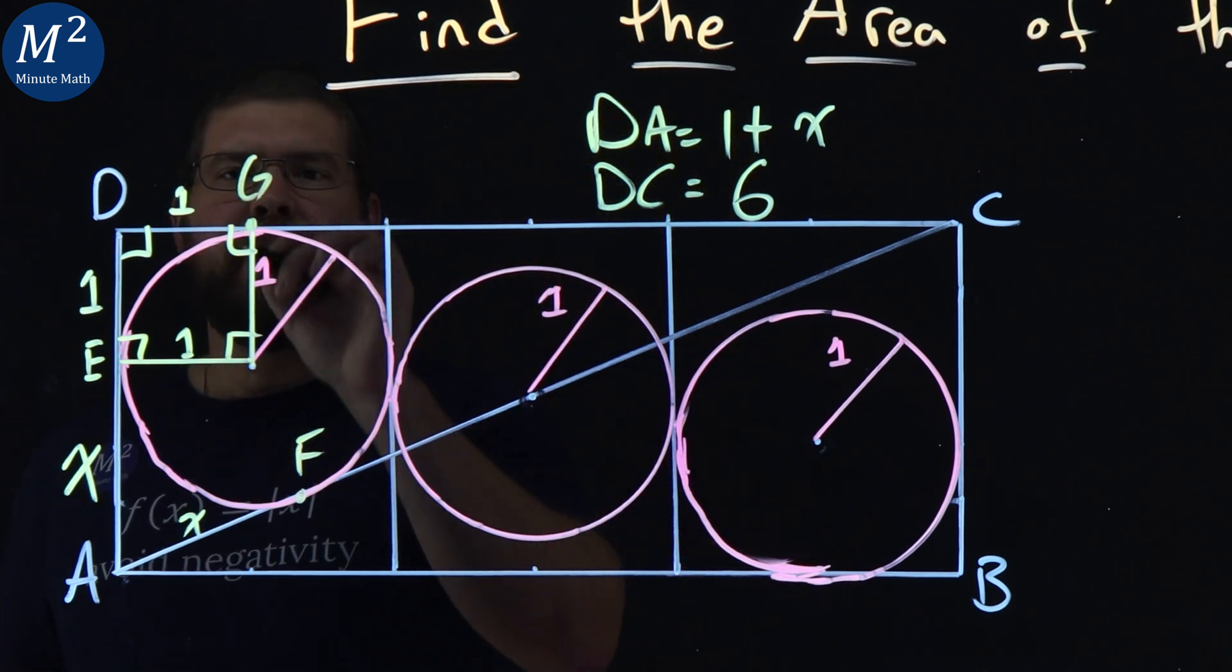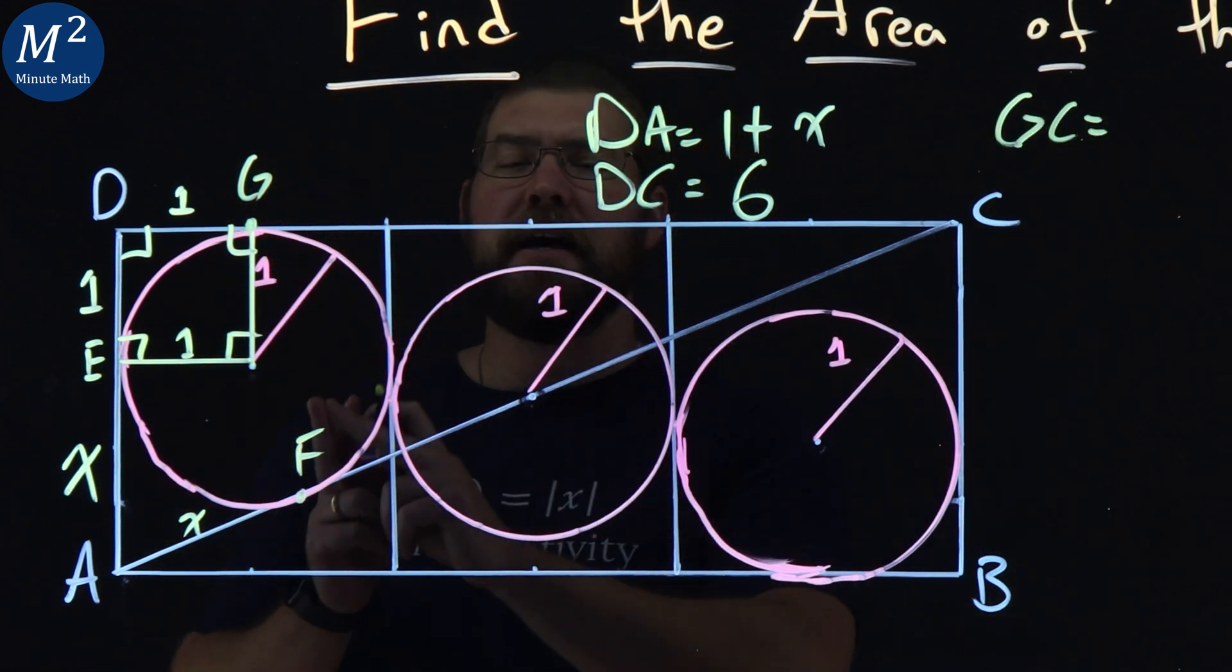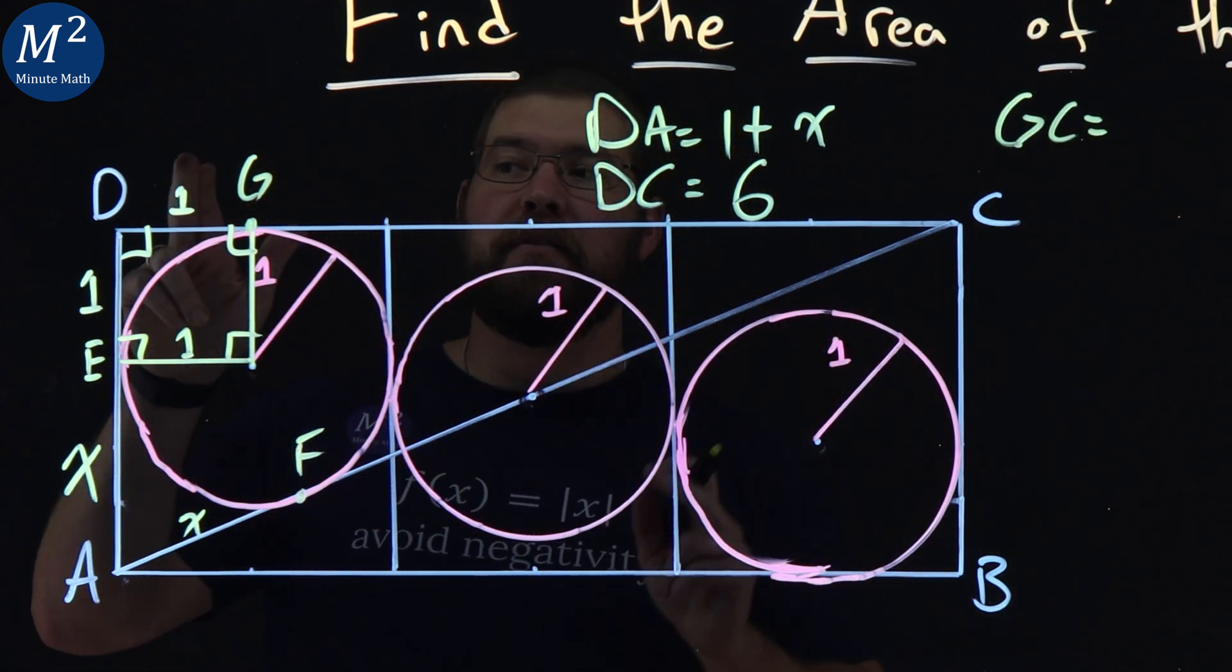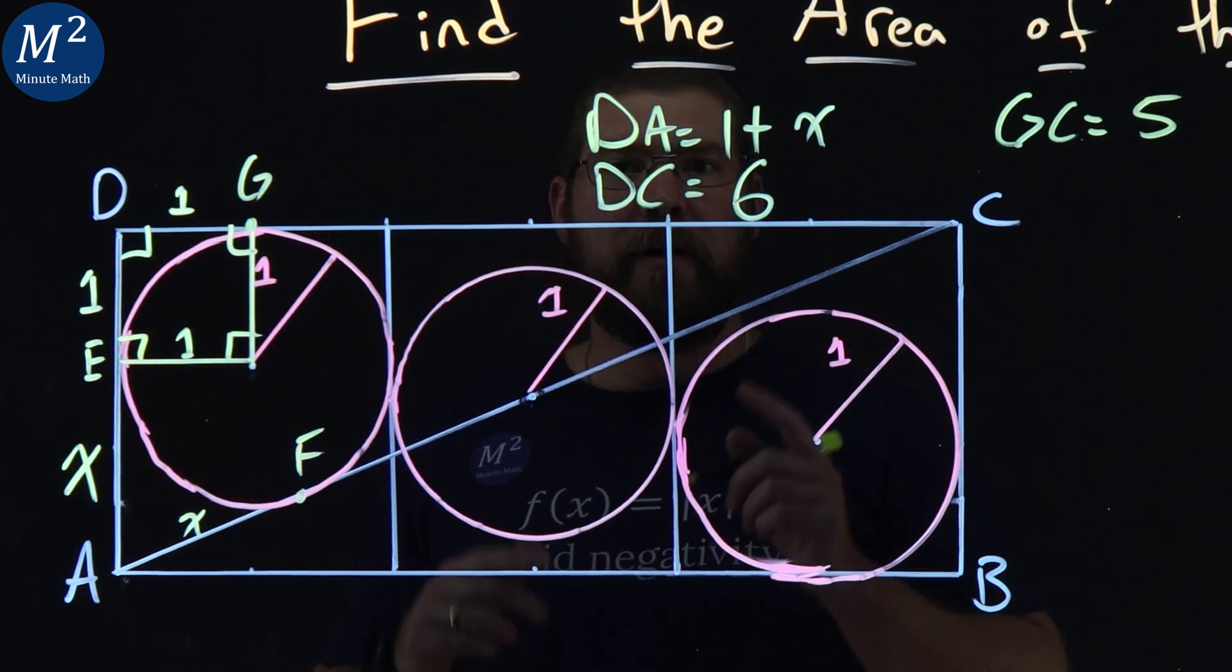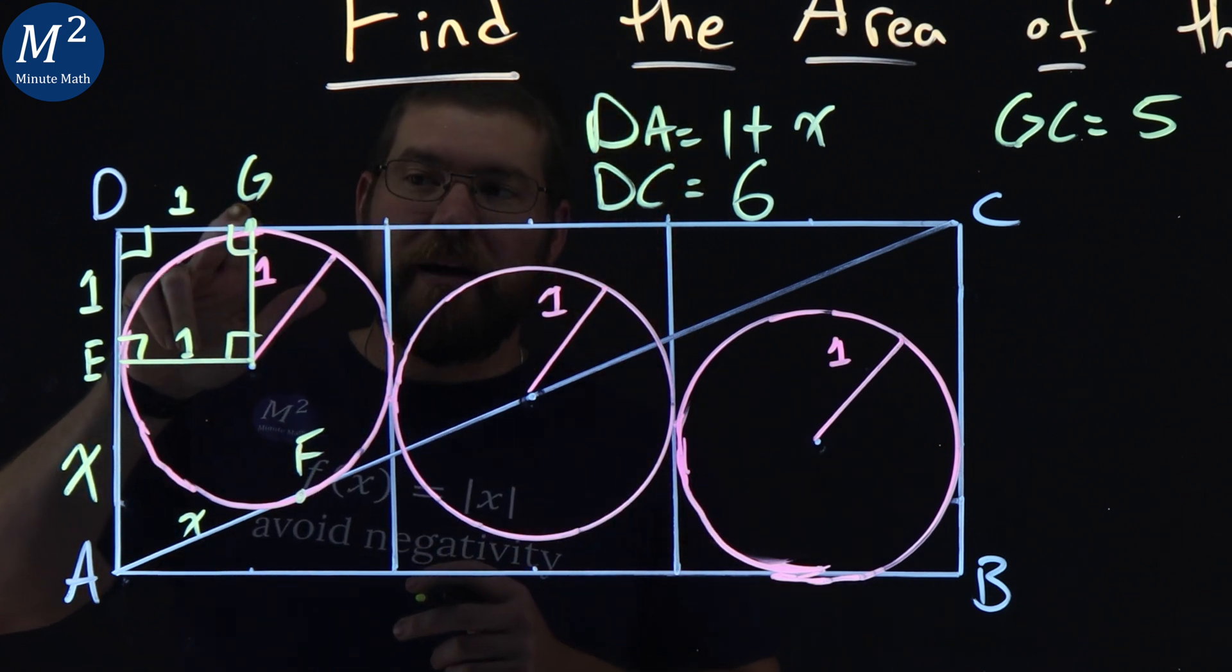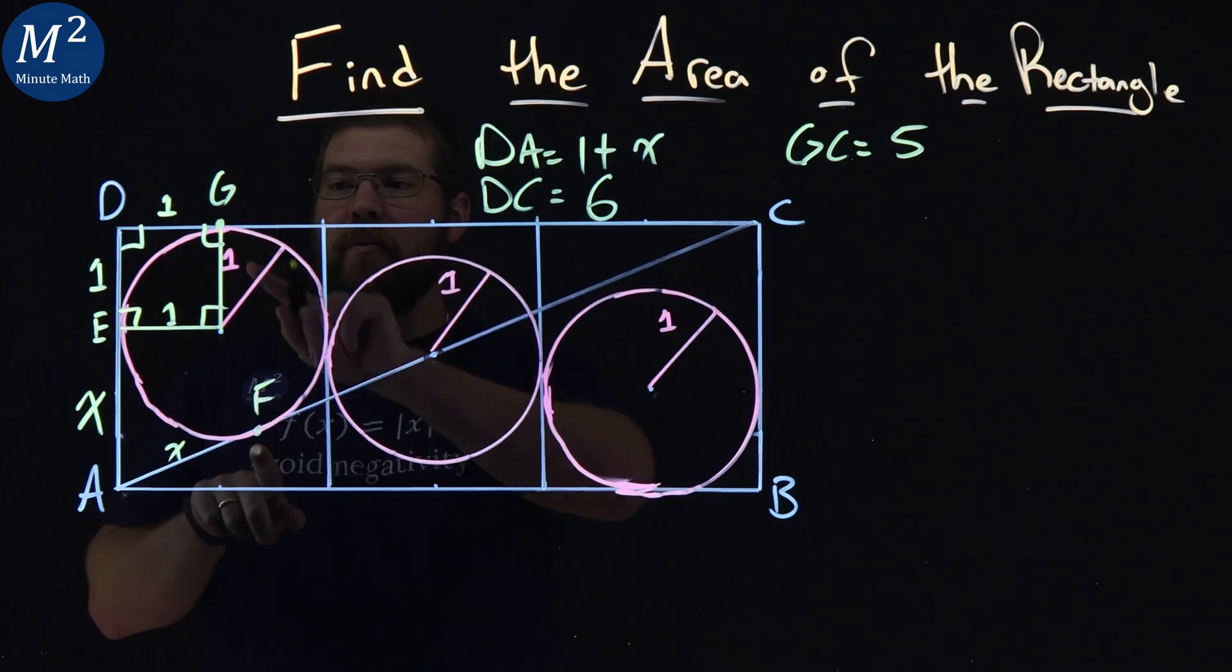Let's get a point here, let's call this G right here. What's the length of GC? Well, GC has a length of, instead of 6 minus that 1, a 5. Well, if GC has a length of 5 and it's tangent right here to that circle, and F is tangent as well, what do we got?